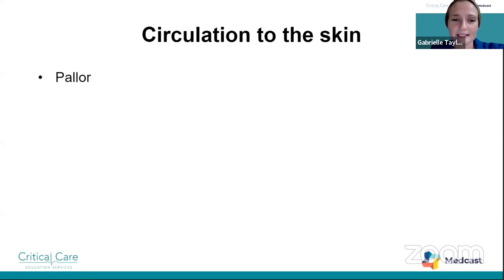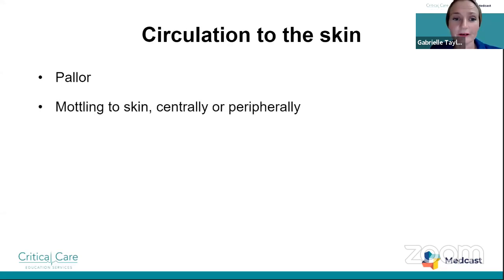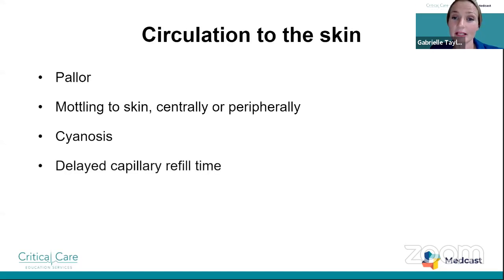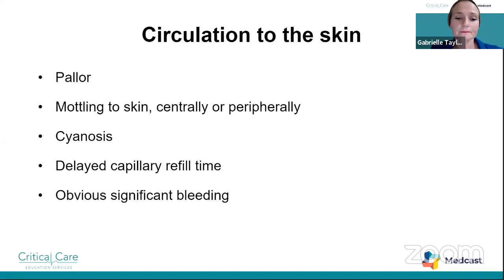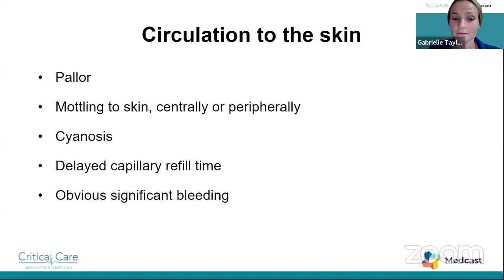Circulation to the skin includes pallor, mottling centrally or peripherally, cyanosis, delayed capillary refill time of three seconds or more, or obvious significant bleeding. Circulation to the skin is an excellent indicator of perfusion in children — we're looking for changes from their normal status. If they're pale, is that normally their color? Some children are naturally pale or mildly mottled. Maybe cyanosis is normal for them due to a cardiac history. Normal circulation means normal color for that child, and parents are usually the best reference.